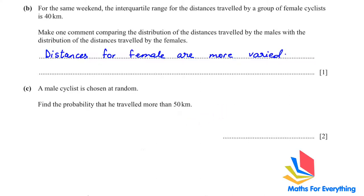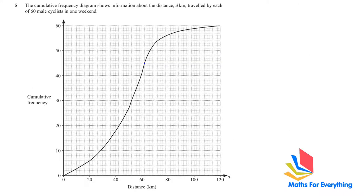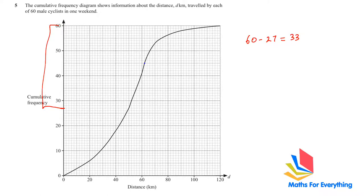A male cyclist is chosen at random. Find the probability he traveled more than 50 kilometers. At 50 km on the graph, the cumulative frequency is 27, so 60 − 27 = 33 cyclists traveled more than 50 km. The probability is 33/60 = 11/20.